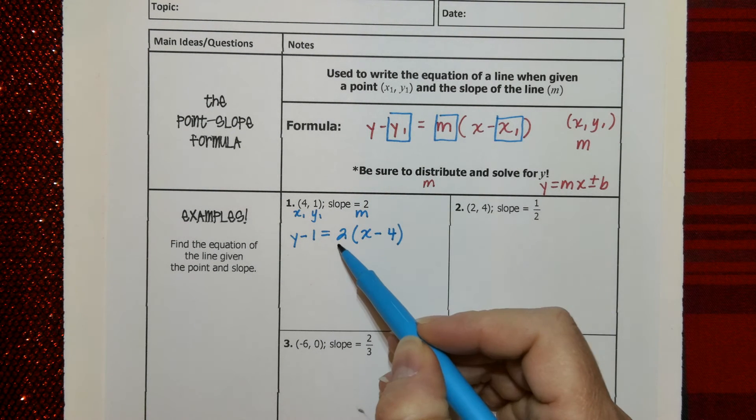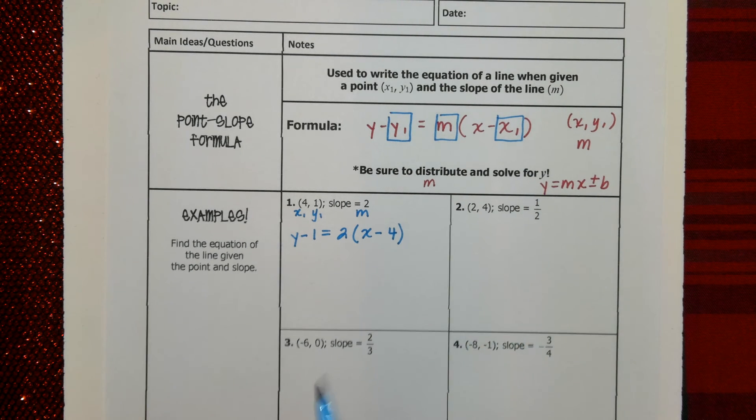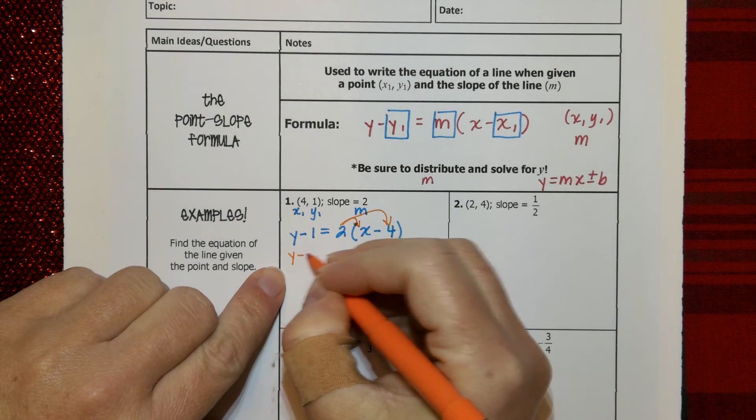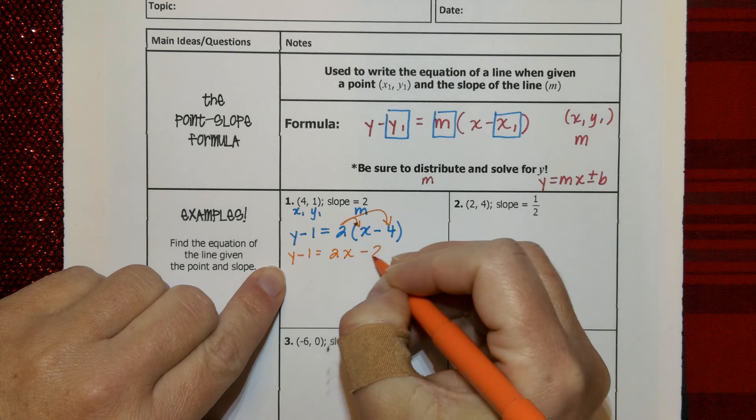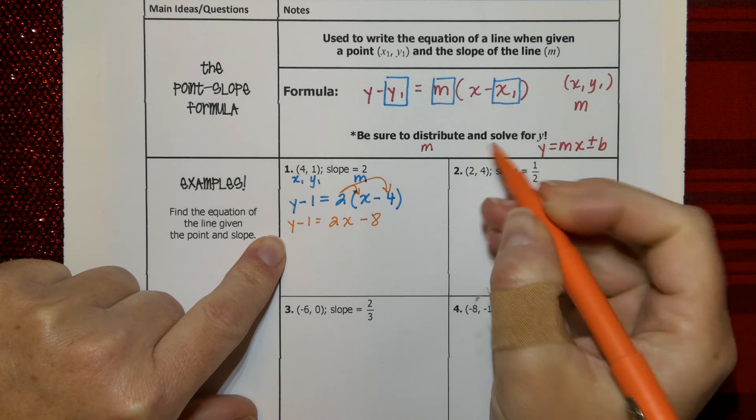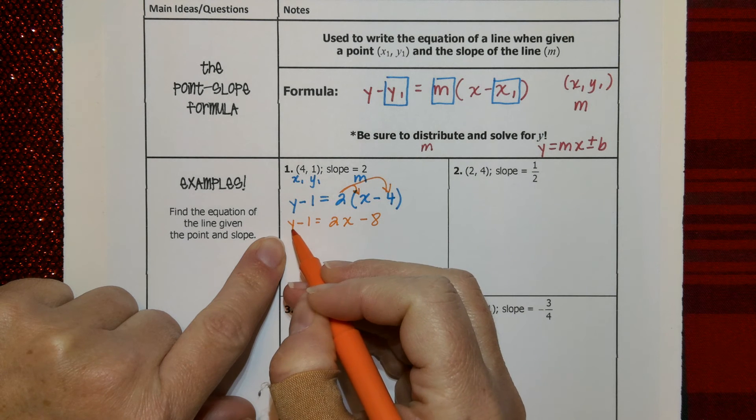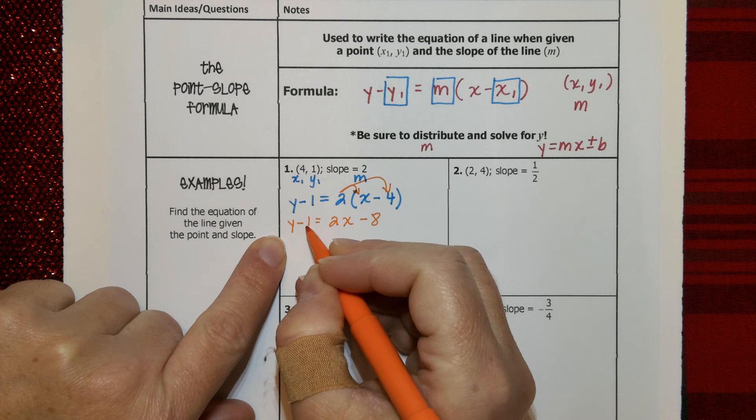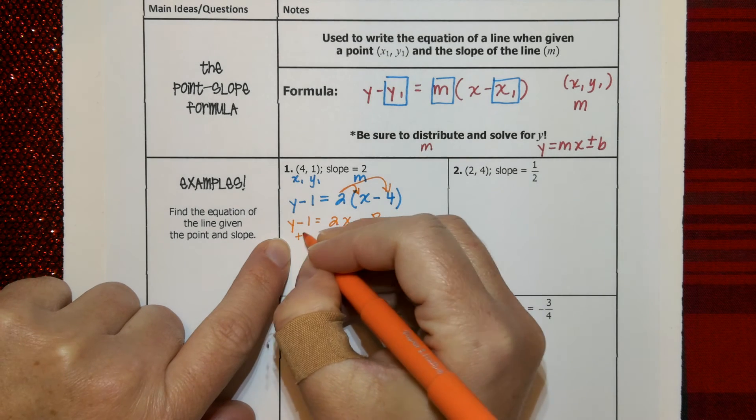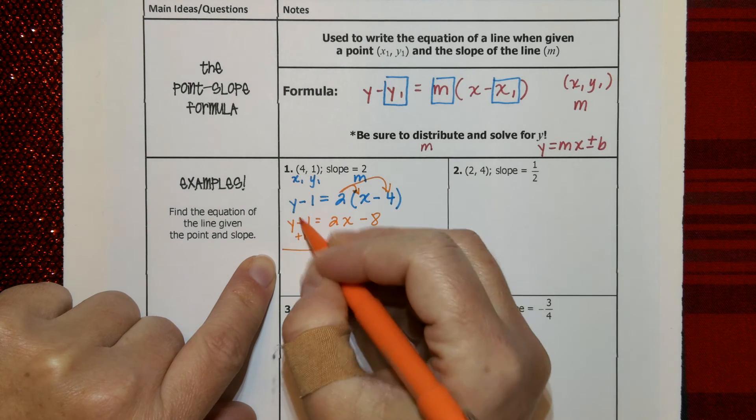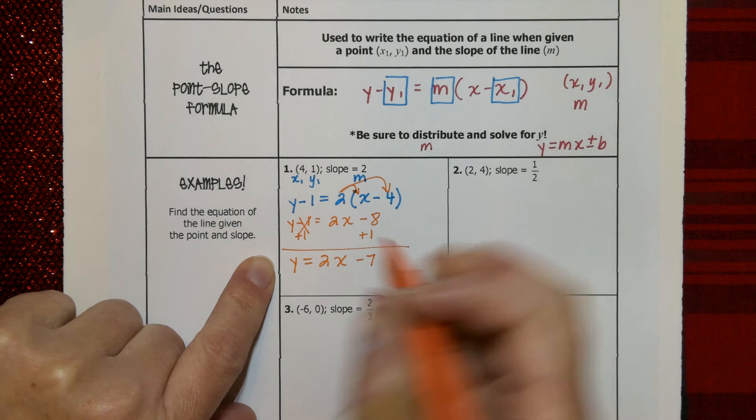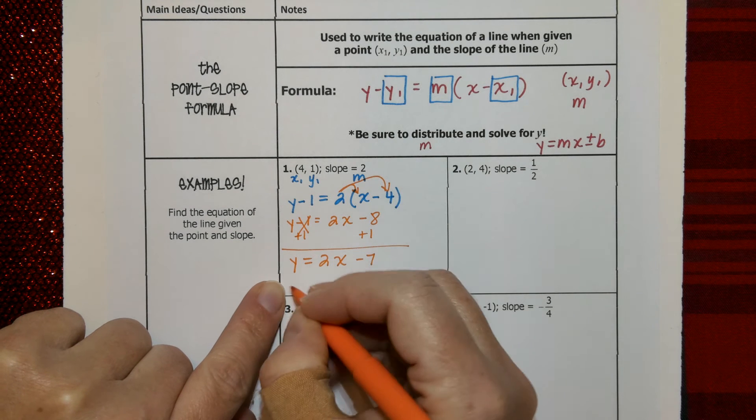But we're not done. If only it were that simple. I wish I could just let you leave it like that, but no, no, no, no, no. So now we're on to these directions, where you have to distribute the M. In this case, that's a 2, and then solve for Y. So now we're going to distribute that 2 here and here. So here's what we have. We have Y minus 1 equals 2X minus 8. Okay, so I did the distributive property. And now we solve for Y, meaning this guy right here, this Y, is who I want to have alone. So right now, Y is not alone. He has a minus 1. So how do you move that minus 1 over? Well, you add 1. Those cancel.